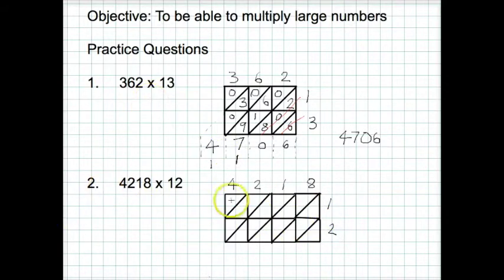Now we multiply these together again. So 1 times 8 gives me 8. 1 times 1 gives me 1. 1 times 2 gives me 2. And 1 times 4 gives me 4. And then 2 times 8 is 16. So we write 1 in the top section and 6 in the bottom. 2 times 1 is 2. 2 times 2 is 4. And 2 times 4 is 8.